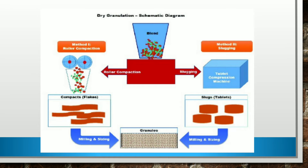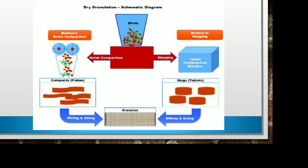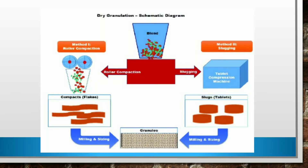This is the diagrammatic representation of dry granulation. You can see over here the blend. The blend can be converted to granules by either of two techniques: either with the help of roller compaction or with the help of slugging.